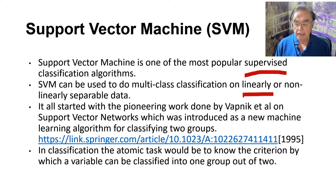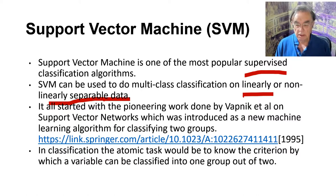We can either use directly linear formulae or we can use kernels and have a non-trivial functional dependence. This all started with Vapnik in 1995, a long time ago, in support vector networks.